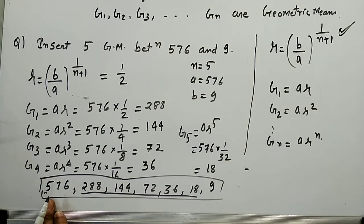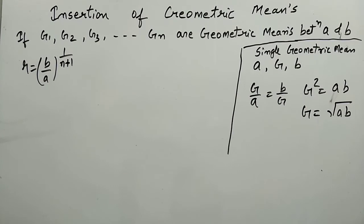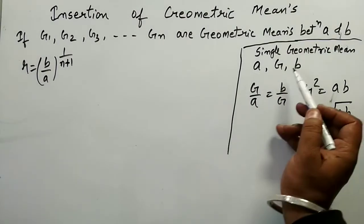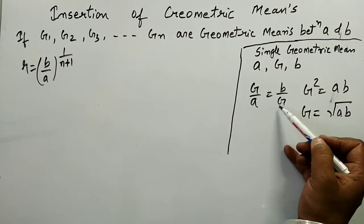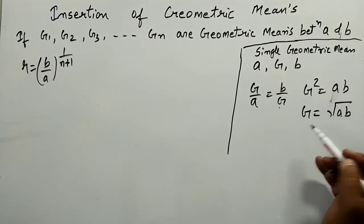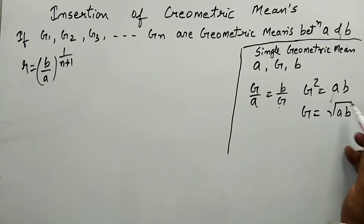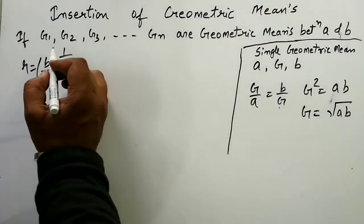That was a problem on insertion of geometric means between two given numbers. One more property: if you insert a single geometric mean g between two numbers a and b, since the common ratio is the same in a GP, we get g squared equals a times b, or g equals the square root of ab.